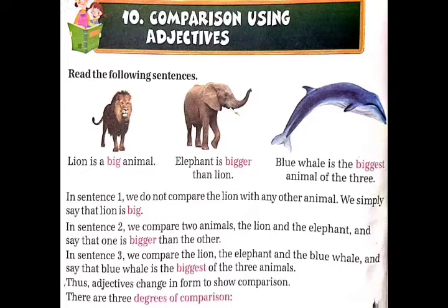In sentence first, we do not compare the lion with any other animal. First sentence में, हम किसी दूसरे जानवर से lion की compare नहीं करते हैं. We simply say that lion is big. हम simply कहते हैं कि lion big है, means बड़ा है.